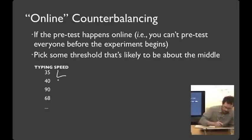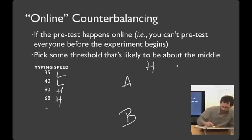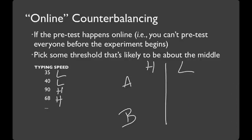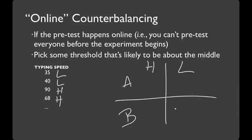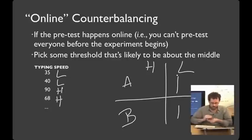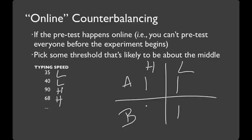So, 35 we would say is low, 40 is low, 90 is high, 68 is high, and so on. And you can assign them to your two different conditions. I'll call them A and B by high and low. So, our first low person to come in, 35 tails. So, they go to B. And then to balance that out, 40 would go heads. Next time we got a pair of lows, we could flip the coin again. And we're going to do that for the highs also. So, the highs come in and heads. So, our first high will go to A. And our second high will go to B.